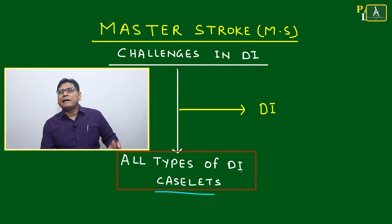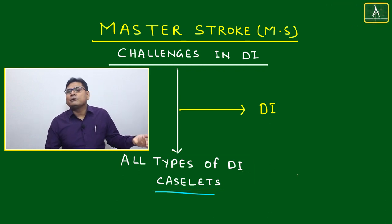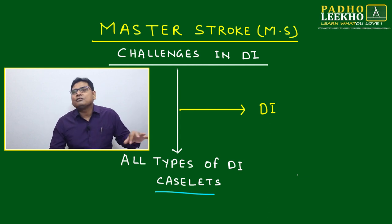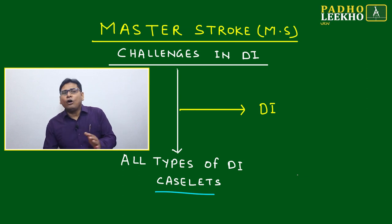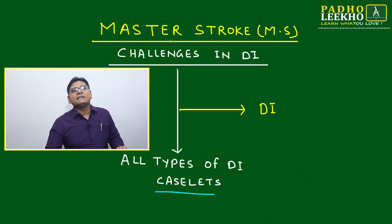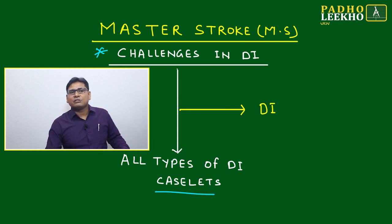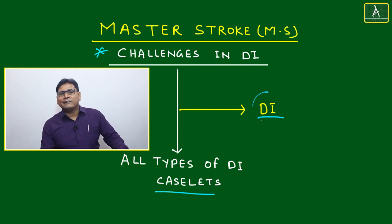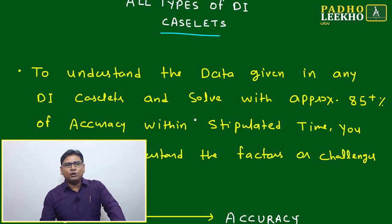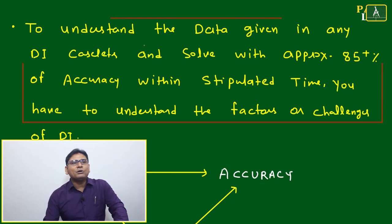DI case lets range from Type 1 to Type 8: Type 1 is based on tables, Type 2 is based on graphs, Type 3 is based on sets and subsets, Type 4 is based on averages and allocation, and so on up to Type 8. The concept we are going to discuss about challenges in DI can be applied to all these types and will affect your entire DI and LR section.